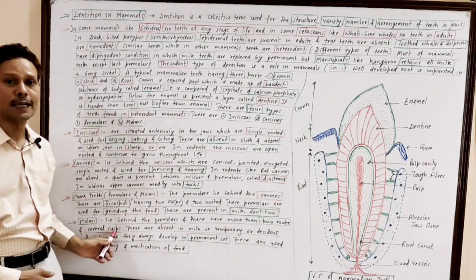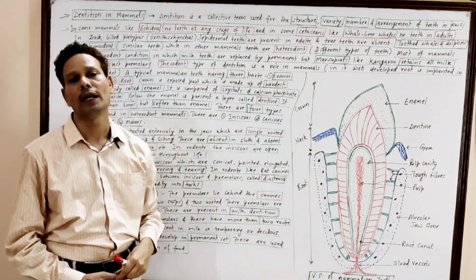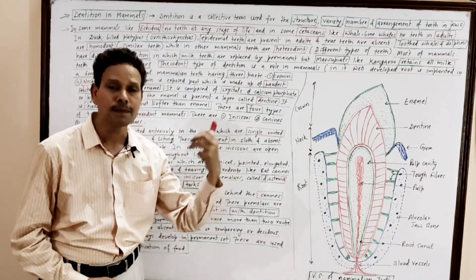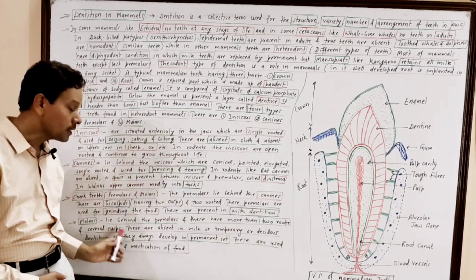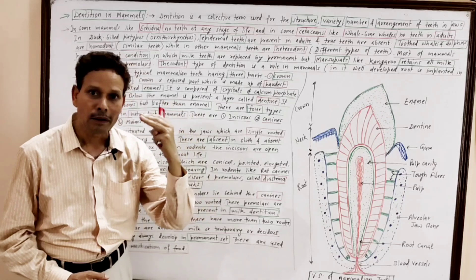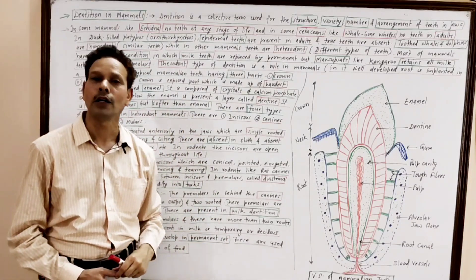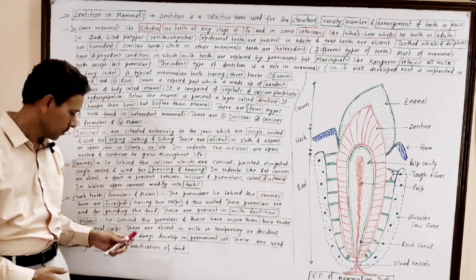While the molars, which lie behind the premolars, these molars have several cusps and more than two roots. Note down, these molars are absent in temporary dentition. It means the molars are part of permanent set. And these are used in crushing.